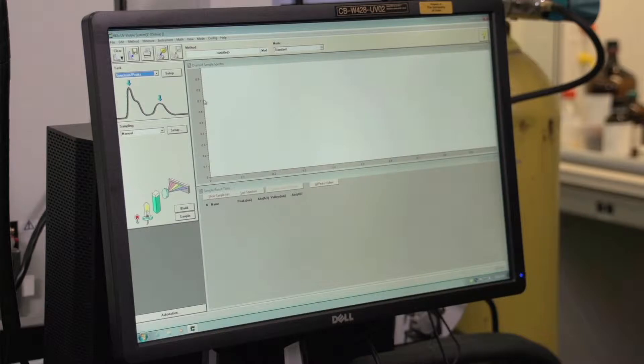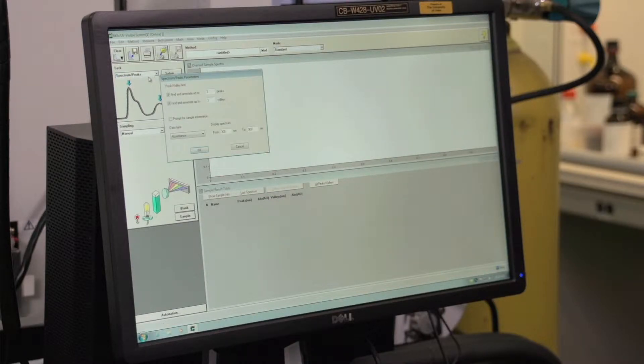Now we're ready to take the spectrum. Before collecting the background, we'll need to make sure that the software is set up properly. Go to methods, and then check spectrum peaks, and then go to method again and check setup analysis. We'll need to make sure that we have three peaks, but uncheck the three valleys section, and then make sure that the spectrum is displaying from 300 nanometers to 900 nanometers. Then select OK.